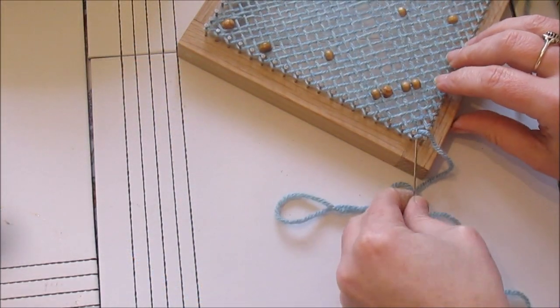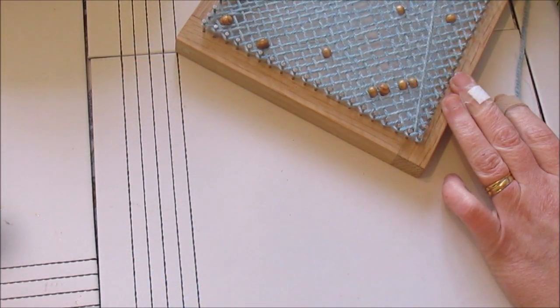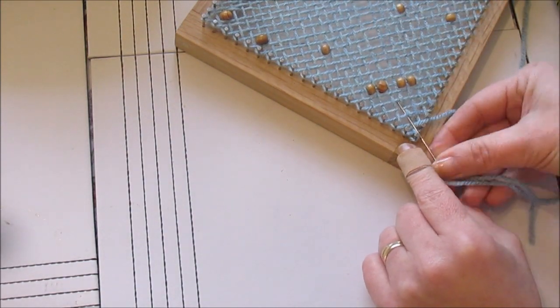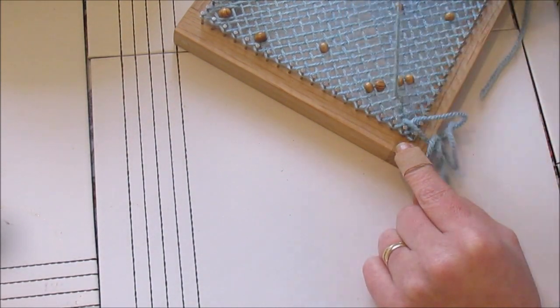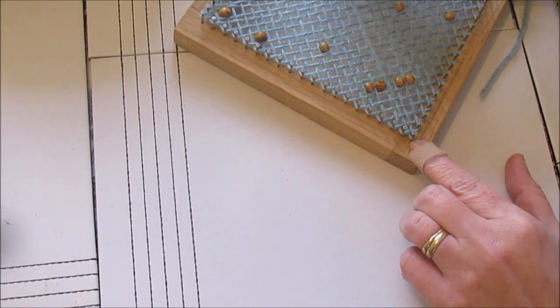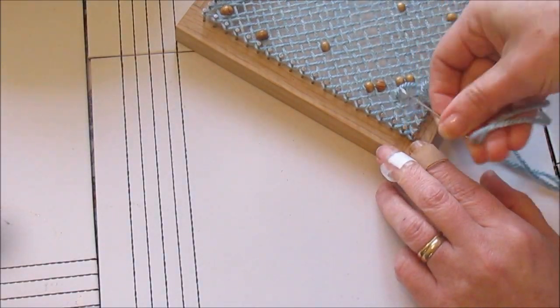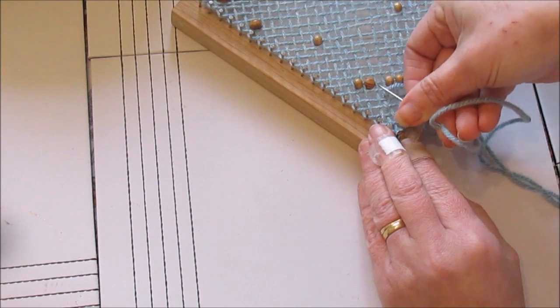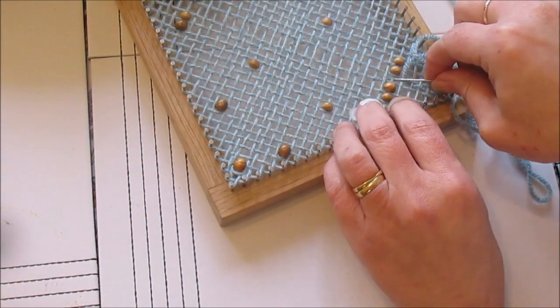Now all that's left to do is thread up your sewing needle and weave down the piece. This is the same technique as we use on every square and if you haven't yet watched the basic square tutorial that shows you very clearly on how to finish.